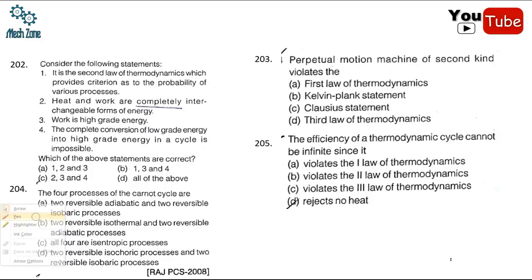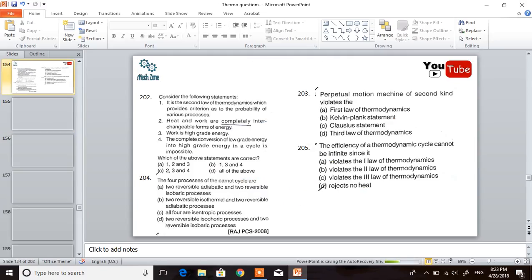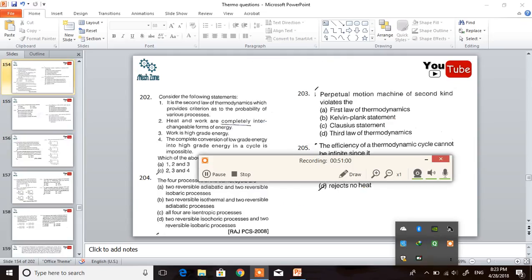Question 202: consider the following statements. Statement 1 — it is the second law of thermodynamics which provides a criterion for the probability of various processes (reversible or irreversible) — is absolutely correct. Statement 2 — work is a high-grade energy — is also correct. Statement 3 — complete conversion of low-grade energy into high-grade energy in a cycle is impossible — is also correct. Therefore the correct answer is option B.